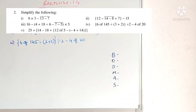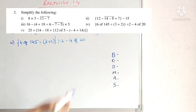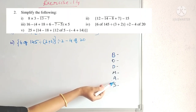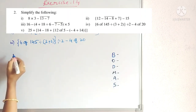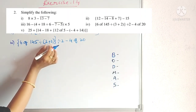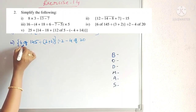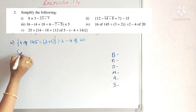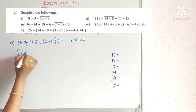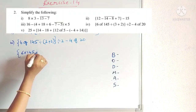Fourth problem: 'Of' is there and a bracket is also there. By BODMAS, bracket first, then Of. Simple bracket: 3 + 2 = 5. So we will write the expression with 5 in place of the bracket.